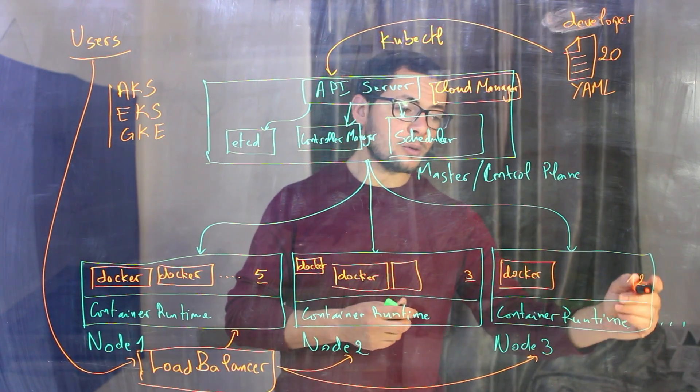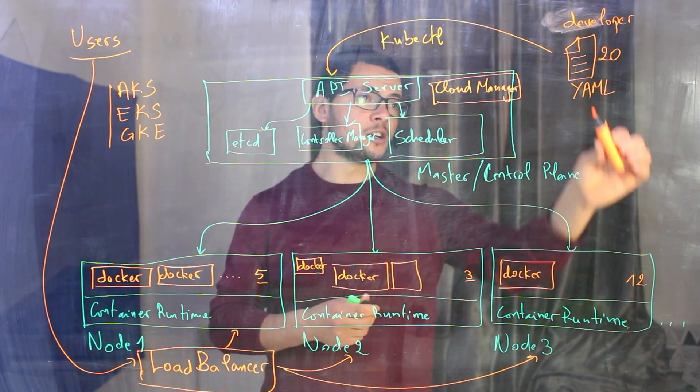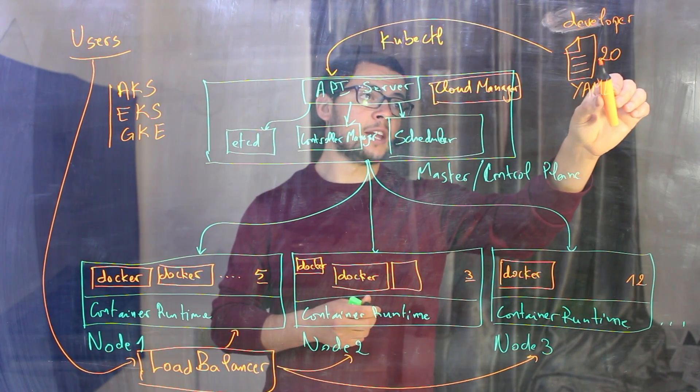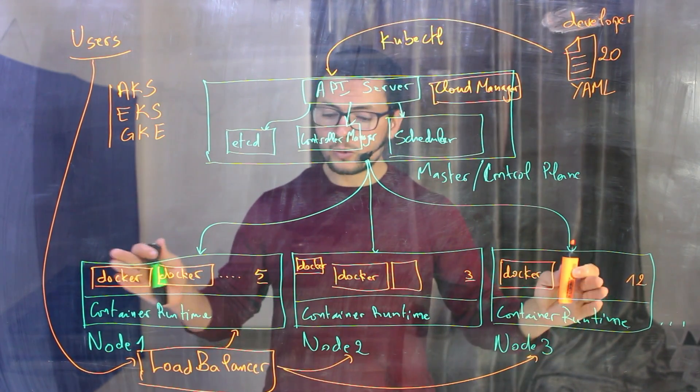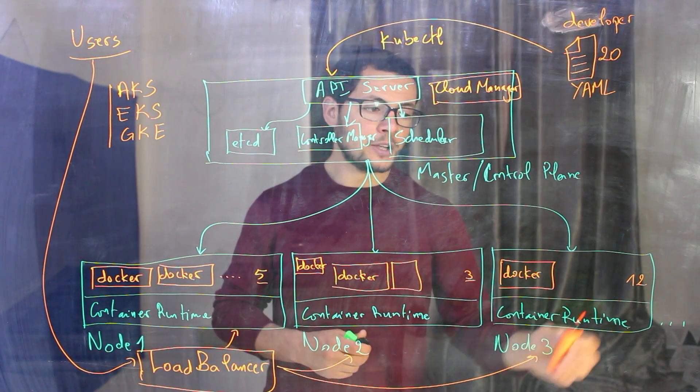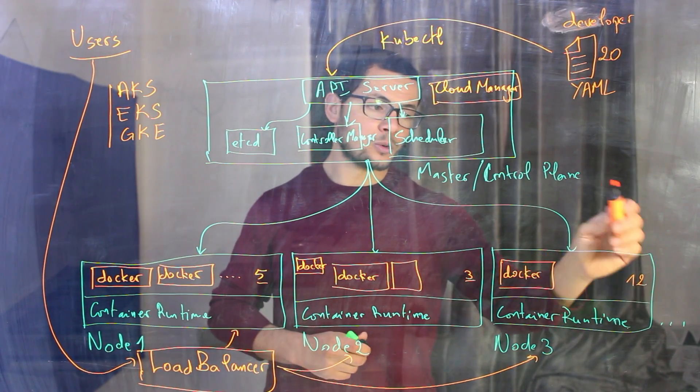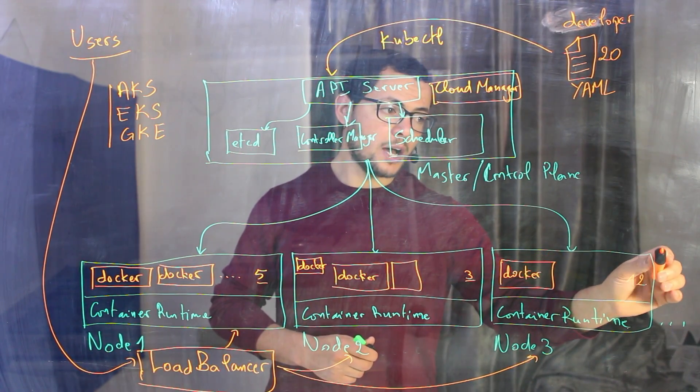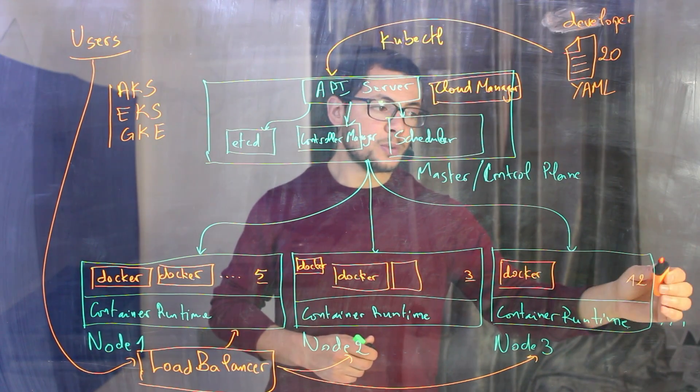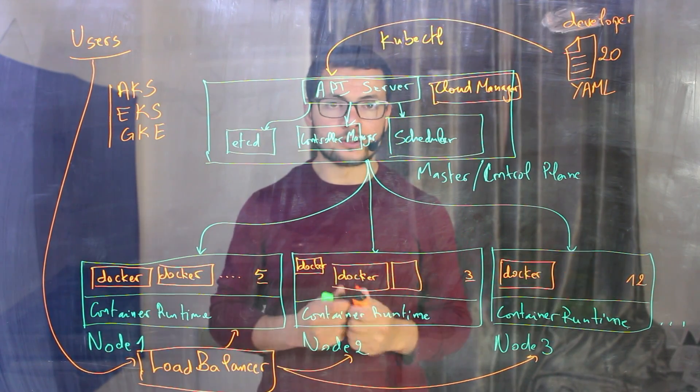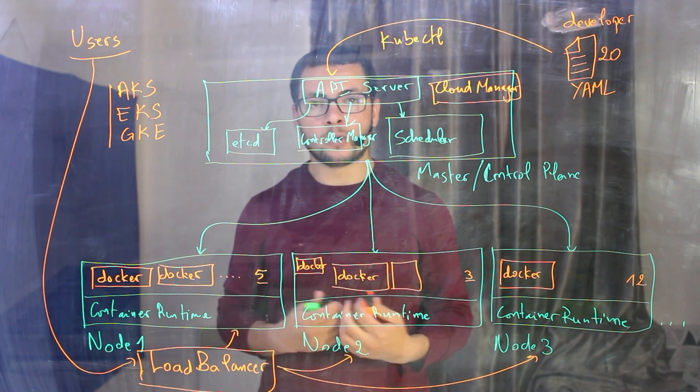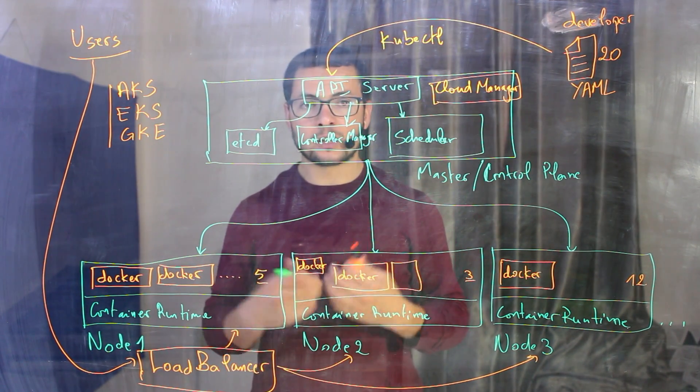And it could ask him also to give him more virtual machines because here if I'm asking to run 100 containers of my application on the cluster, maybe those three virtual machines are not enough. So through the cloud manager, Kubernetes might ask to provision new virtual machines to scale out the cluster. So it could run any number of containers that we want.